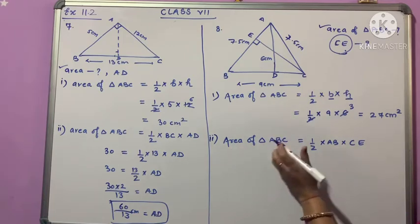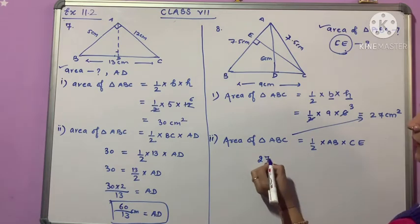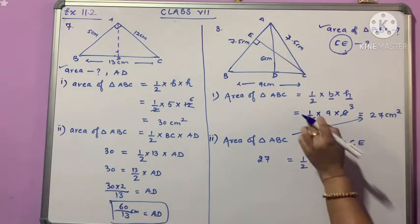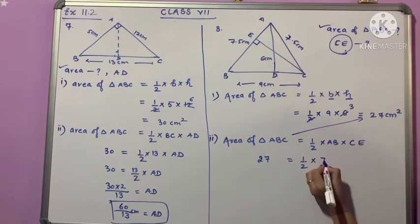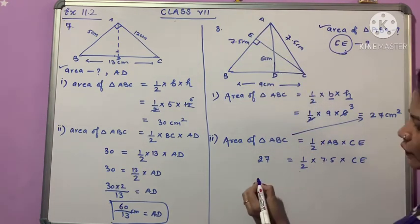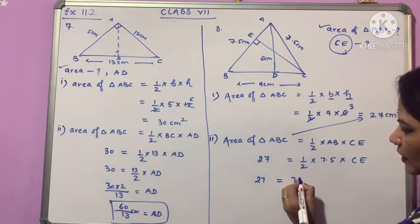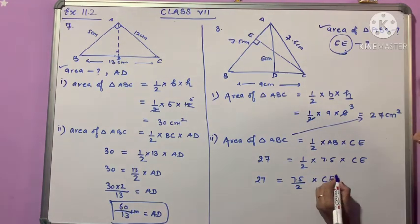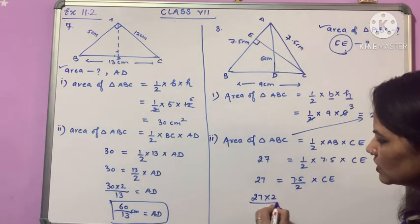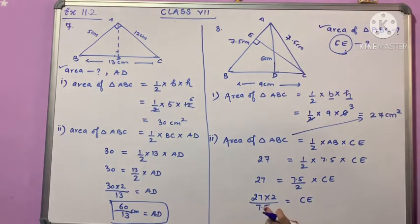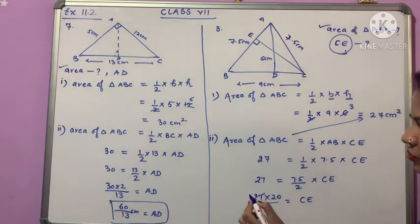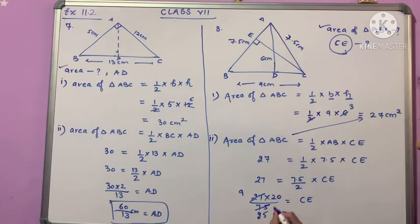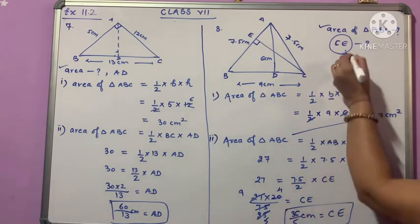27 equals half multiplied by AB. AB is 7.5 cm. So 27 multiplied by 2 divided by 7.5. If you solve this, 27 times 2 is 54, and 54 divided by 7.5 gives you 7.2 cm, which equals CE. You can find your CE this way.